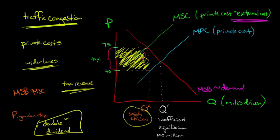The Pigouvian tax is a similar idea to a carbon tax. If someone produces steel and in that process generates a lot of greenhouse gases, the Pigouvian tax would be directly on the steel output itself. But with a carbon tax — called an effluent tax — you're actually taxing the emissions themselves, not the actual output. It's a little different but a similar idea.